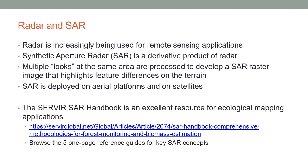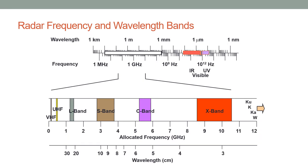In the case of SAR, multiple looks at the same area are processed to develop a SAR raster image that highlights feature differences in the terrain. SAR is deployed on aerial platforms and satellites, and the Servier SAR Handbook is an excellent resource for ecological mapping applications. Radar imaging operates on several different bands — L-band, S-band, C-band, and X-band — names that came about from the Second World War when this technology was developed.